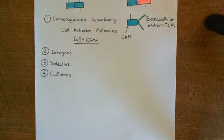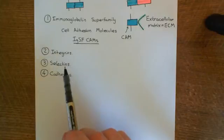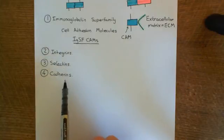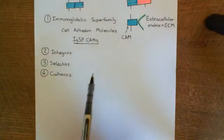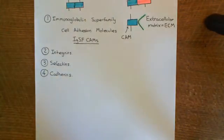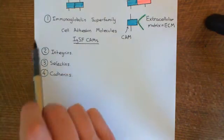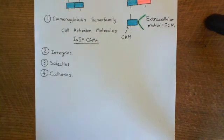Welcome back to this next video in which we're discussing cell adhesion molecules. We've talked about the four main families: the immunoglobulin superfamily cell adhesion molecules, the integrins, the selectins, and the cadherins. Most cell adhesion molecules will fit into one of these four families, though there are exceptions which don't fit into any of them.